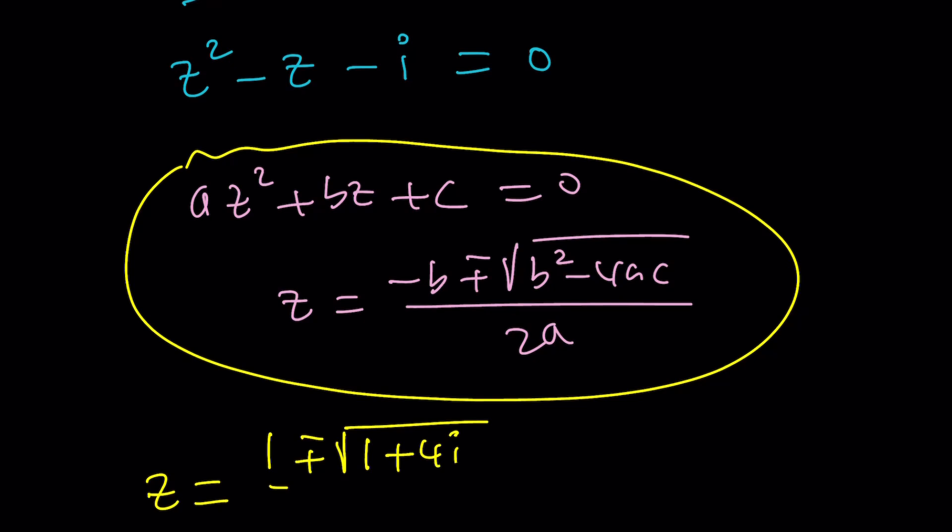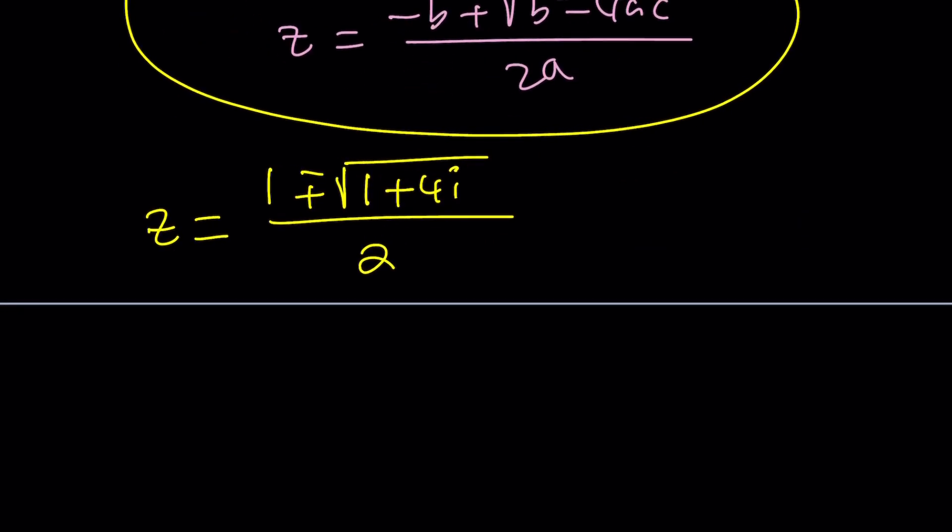By the way, this number comes up a lot. Square root of 1 plus 4i, that's what we're going to explore a little bit here because it's not very straightforward, right? So these solutions will be acceptable, but the biggest question or the million dollar question is, what's the square root of 1 plus 4i?